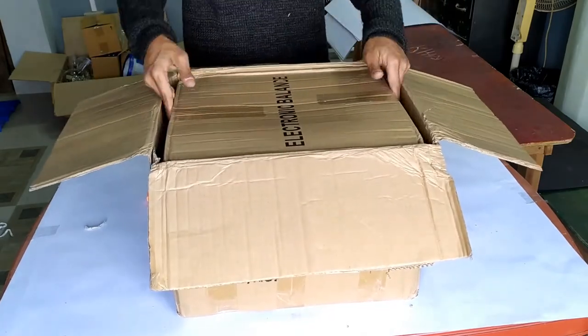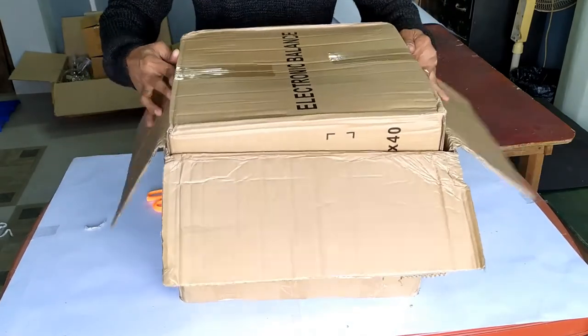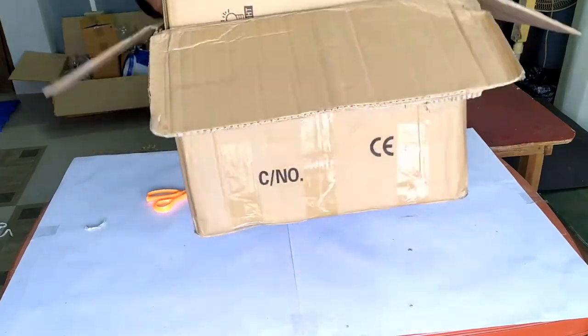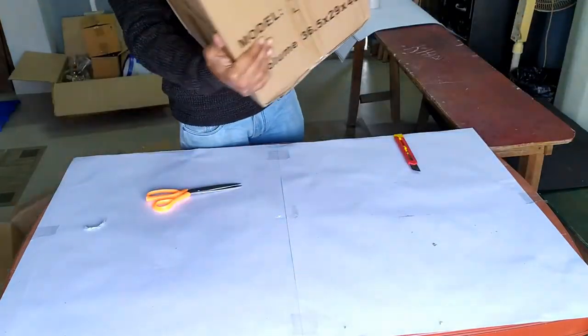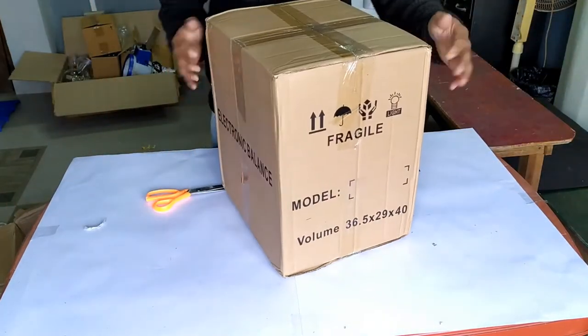A box within a box. This one has electronic balance printed on it. So far no mention of the model name A107 anywhere in these boxes which is kind of weird.